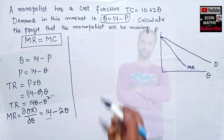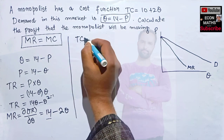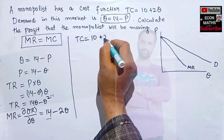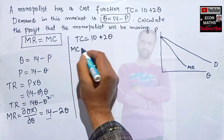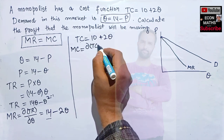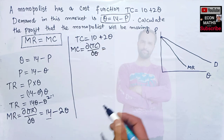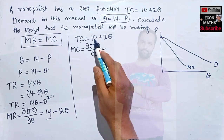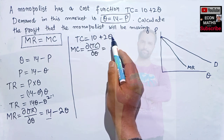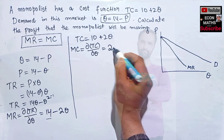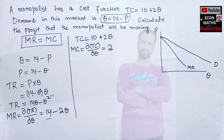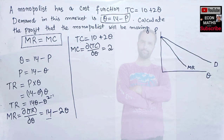Now let's find the marginal cost. Total cost is given as TC = 10 + 2Q. Marginal cost is the derivative of the total cost function with respect to quantity. The derivative of the constant 10 is 0, and the derivative of 2Q is 2. So our marginal cost MC = 2.